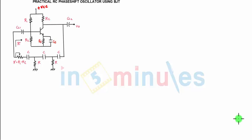Hi, welcome to In 5 Minutes. Next is the practical RC phase shift oscillator. From this point to this point you have the amplifier, which is a common emitter NPN transistor. Why NPN? From the terminals, the arrow is always from P to N, so it is an NPN transistor.